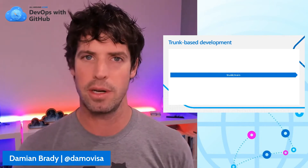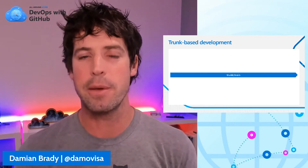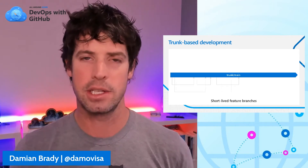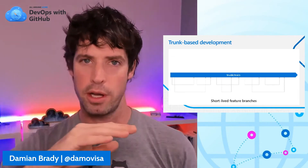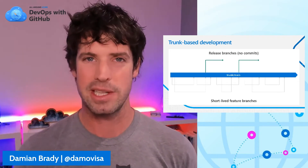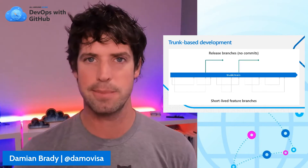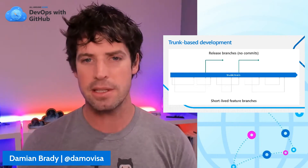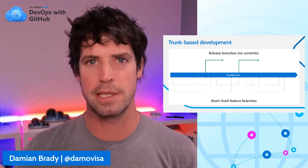Let's visualize a trunk-based delivery methodology that Tailwind Traders is using. We have our main branch, our main trunk of code, and all the work is done in short-lived feature branches. Rather than committing directly to main, we branch away, do some work, and merge back. When we want to deploy, we break off a release branch — this is really just for posterity, with no commits into that release branch. All changes happen in those short-lived feature branches, giving us release branches that can always document what went into production and when.